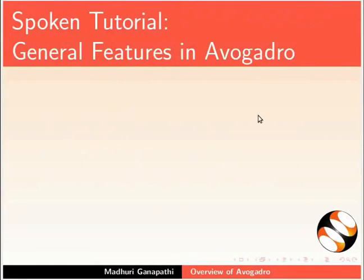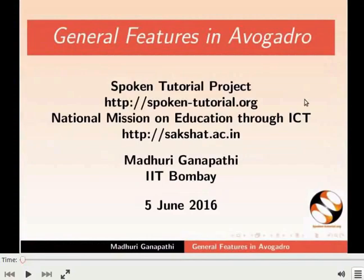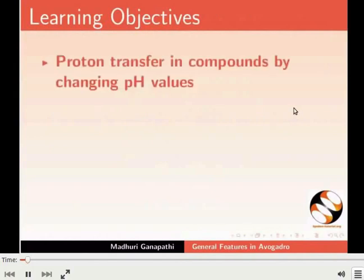The next tutorial is General Features in Avogadro. This tutorial explains about proton transfer in molecules by changing pH values, loading crystal structures and showing Miller planes, building supercells and nanotubes, and showing geometries in coordination compounds. Welcome to this tutorial on General Features in Avogadro. In this tutorial, we will learn about proton transfer in compounds by changing pH values.